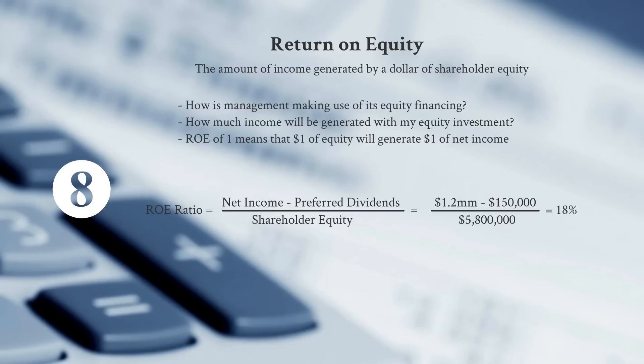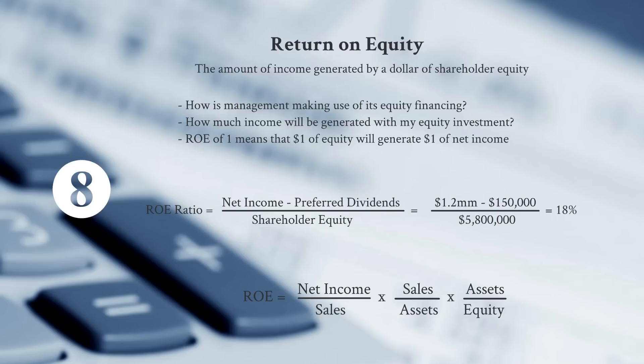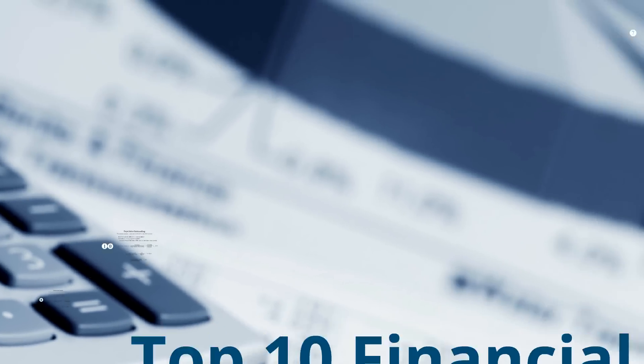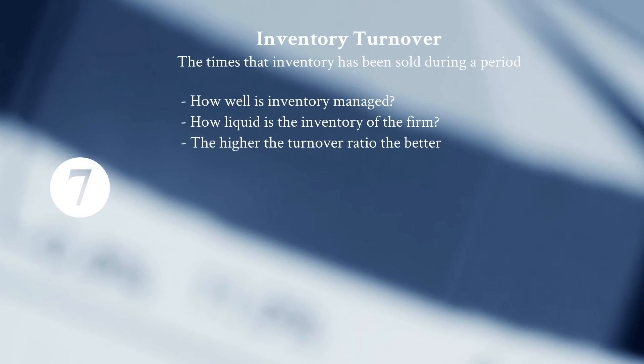ROE can be broken down to see what's contributing to a strong or weak result. We can take net income divided by sales, sales divided by assets, and assets divided by equity — together these give us ROE, and we can identify which components are driving either a strong or weak number and why.